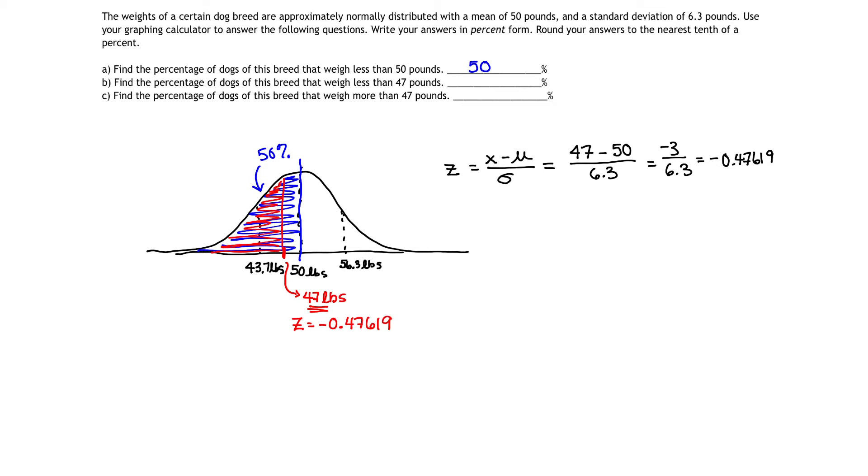That kind of makes sense, doesn't it? Why? Because our mean is where the Z value is 0, right? And one standard deviation to the left is where our Z value is negative 1. Thus, our Z value here, which is just about halfway between negative 1 and 0, is about negative 0.47 or about negative 0.5. So that makes sense in our picture.